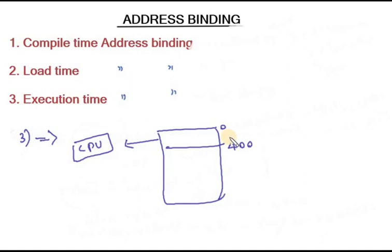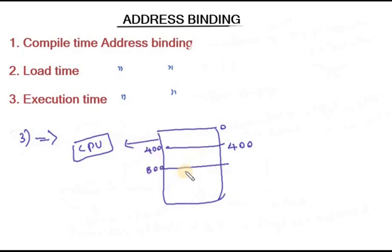If we can move the program from one memory block to another block, and it is allowed, we need to move it. When execution time binding is used, the address will change accordingly at execution time. This is called execution time binding.